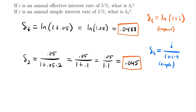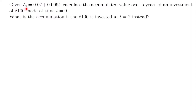Just remember that for simple interest, you also have to be given a time, because T appears in that formula. Now let's look at another example. We have that the force of interest δ(t) = 0.07 + 0.006t. We want to calculate the accumulated value over five years of an investment of $100 made at time equals zero. There is also a second question we'll get to after finishing the first one.